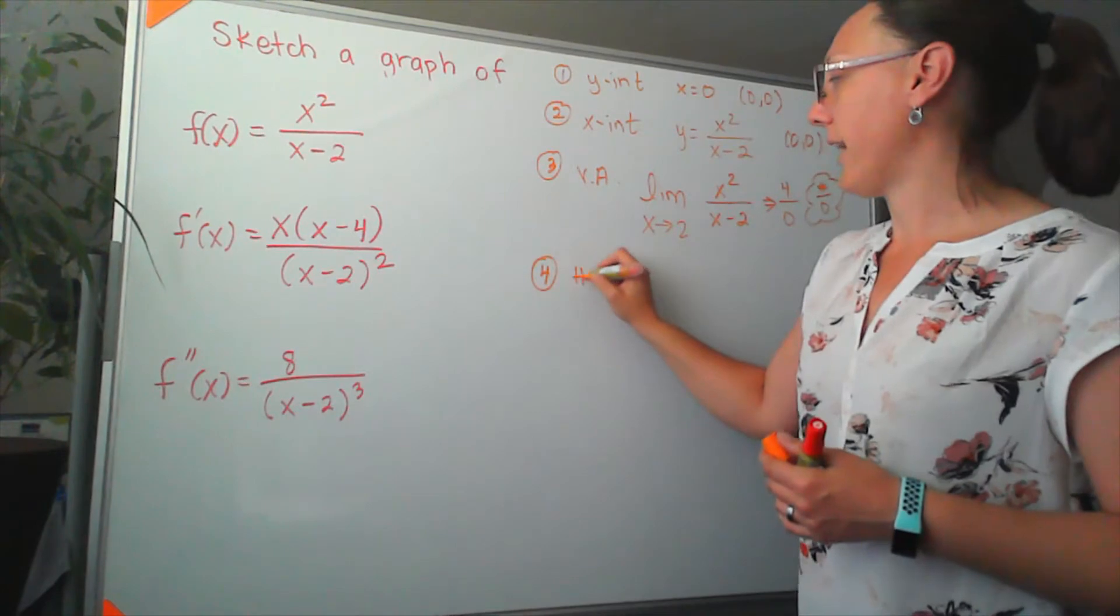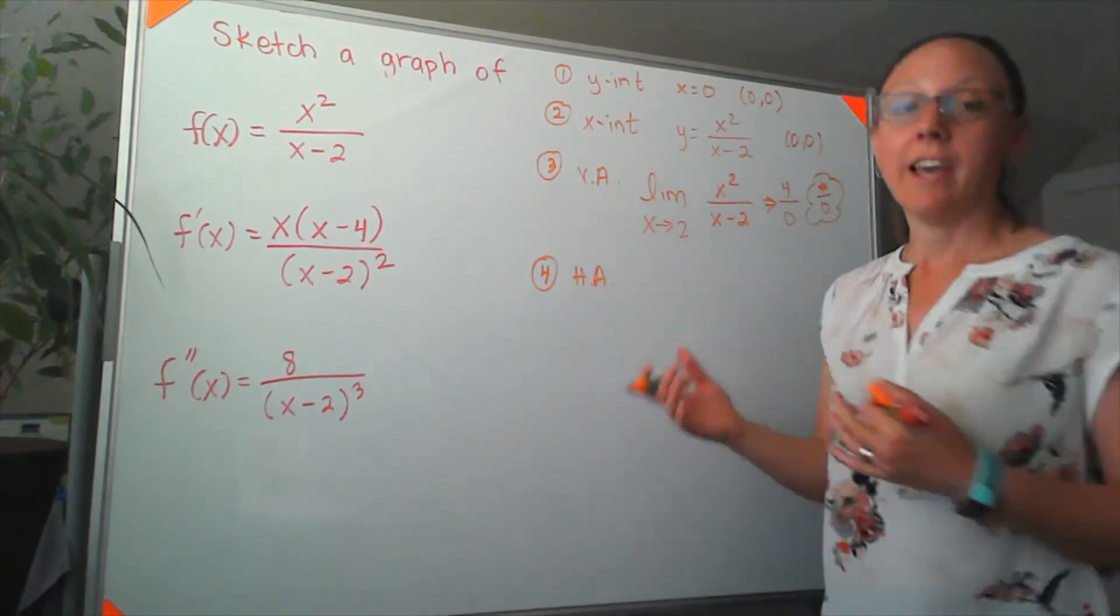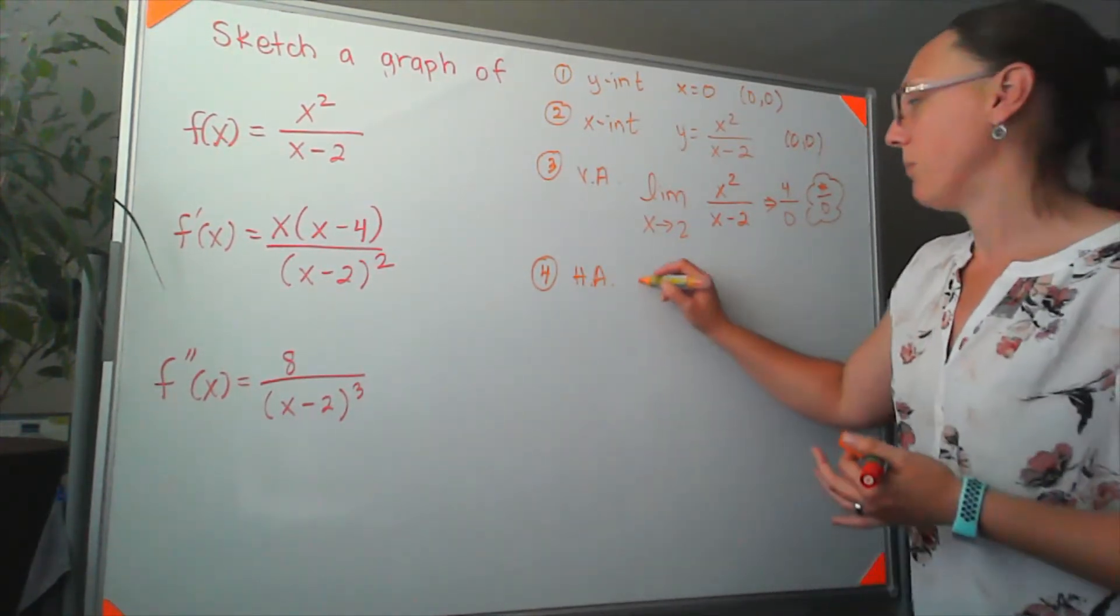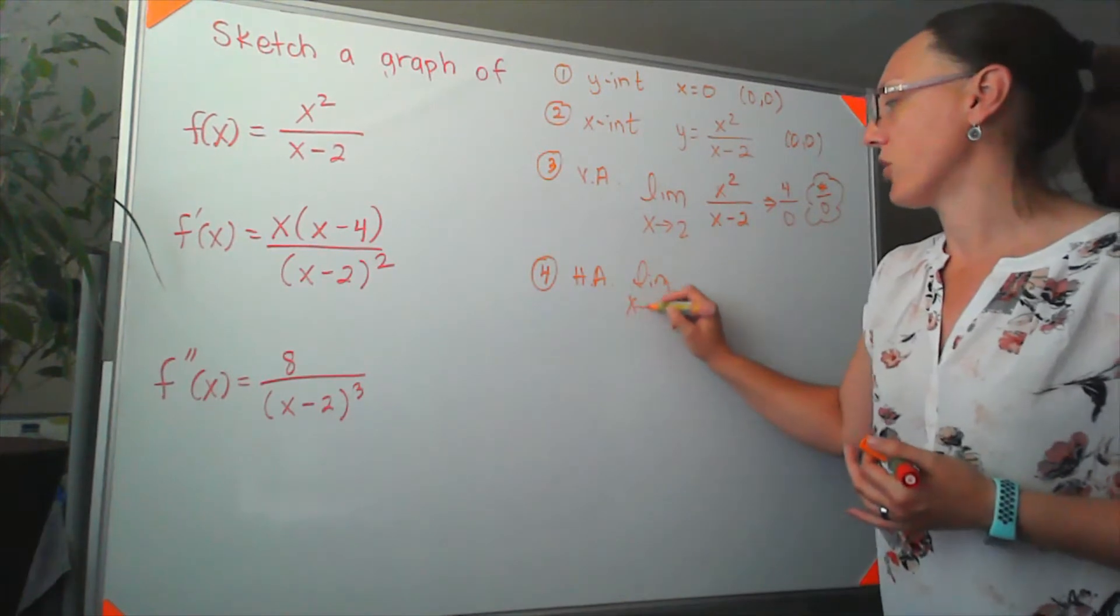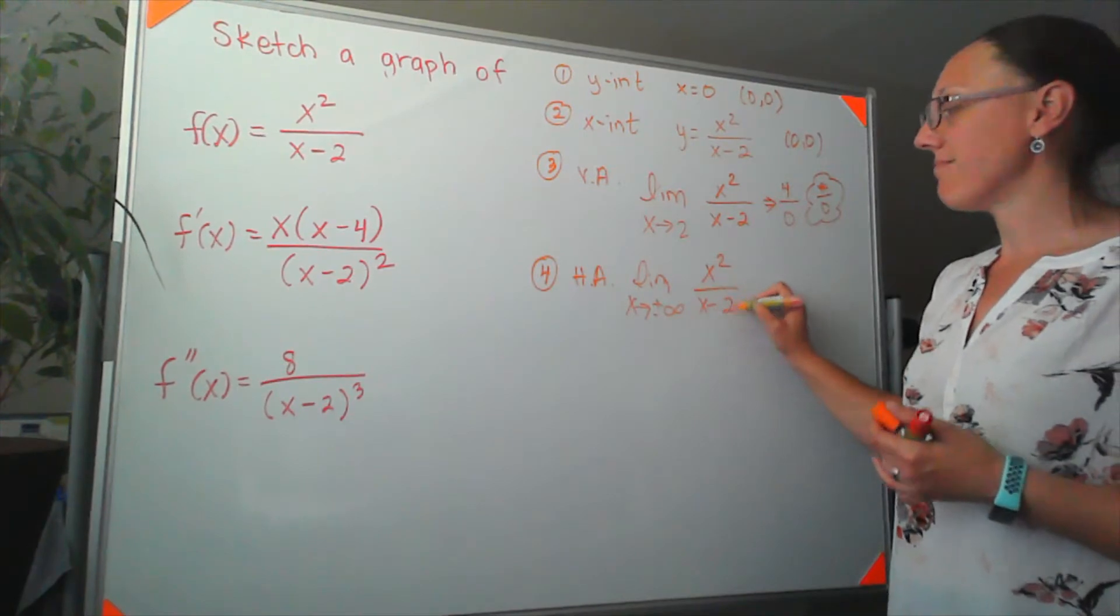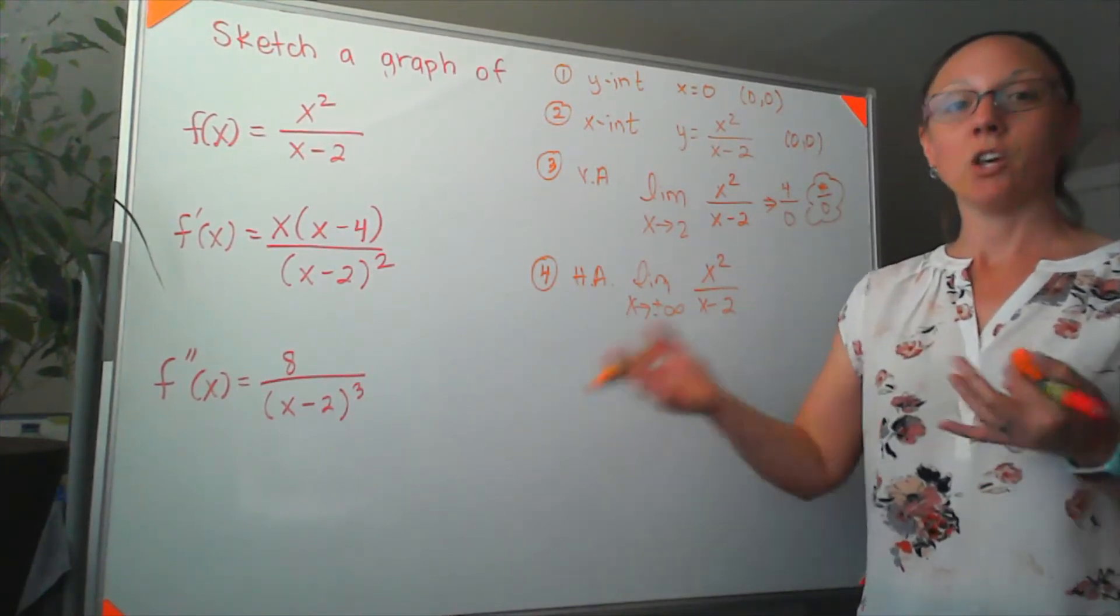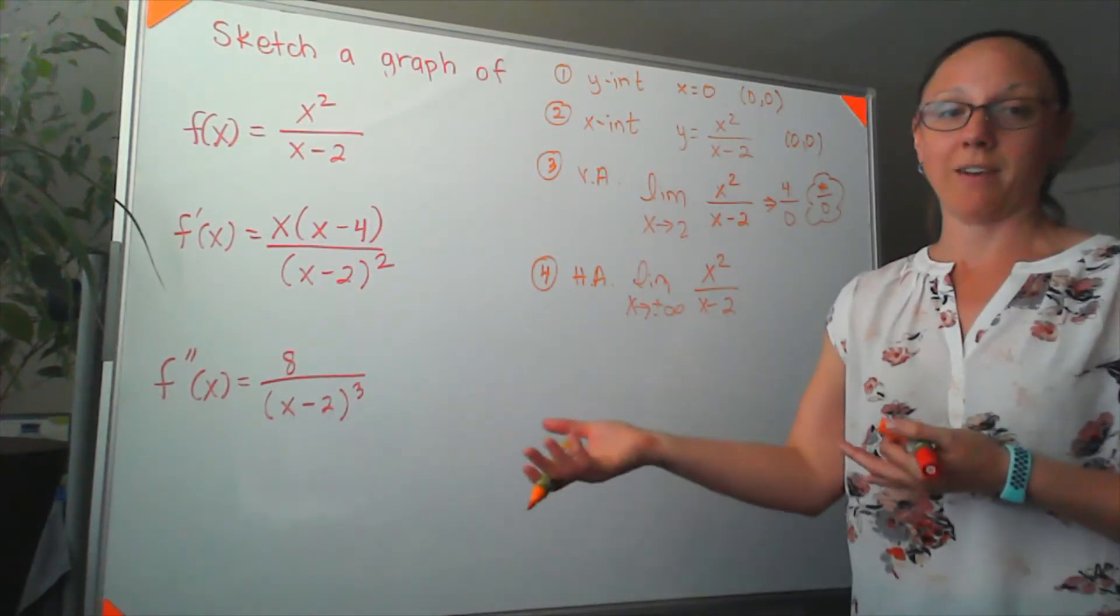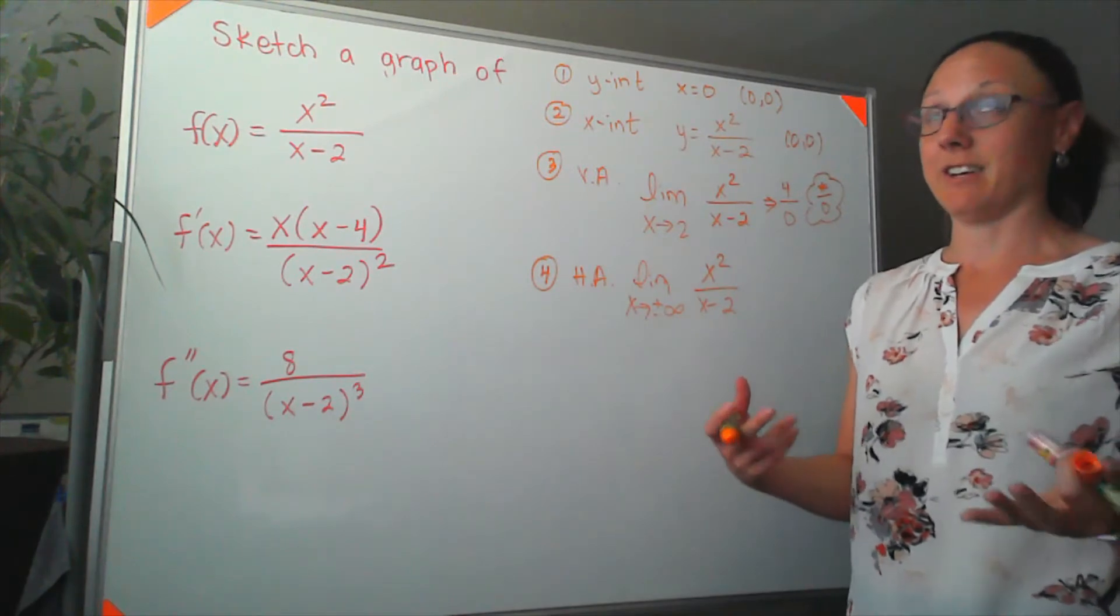The next thing I'm going to look for is horizontal asymptotes. And I'm always finding those the same way, by taking the limit as x approaches positive and negative infinity. Sometimes we can do both at once. Sometimes, if we've got square roots, we're going to have to check the positive infinity and negative infinity sides separately.